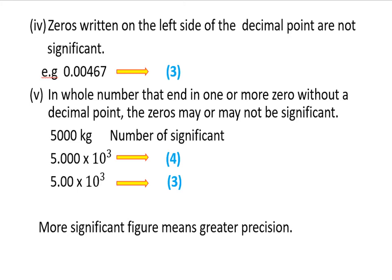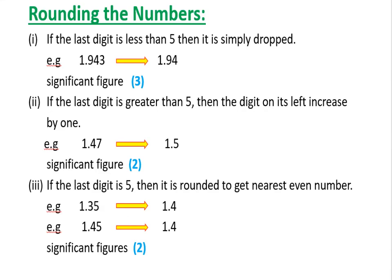A greater number of significant figures means greater precision — if we have more significant figures, the value is more accurate. Now let us discuss rounding of numbers. Here we have three rules.